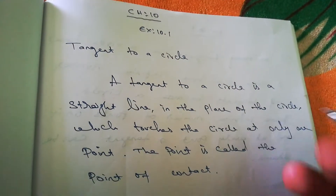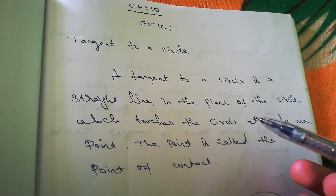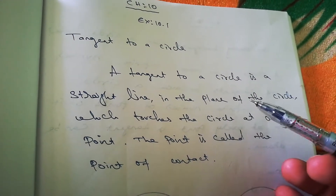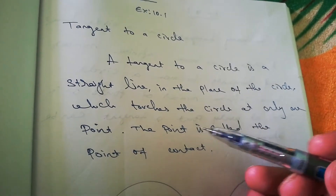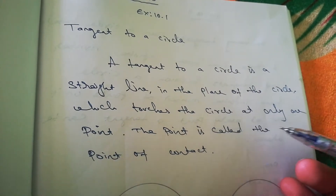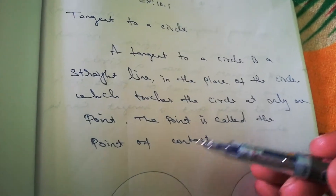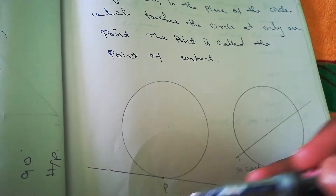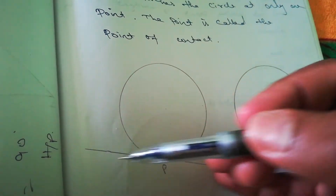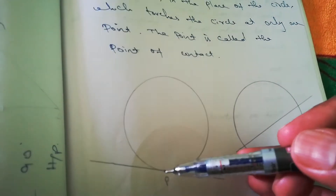Chapter 10: Tangent to a Circle. A tangent to a circle is a straight line in the plane of the circle which touches the circle at only one point. That point is called the point of contact. We can see a circle touching a point here — this line is called a tangent and this point is the point of contact.